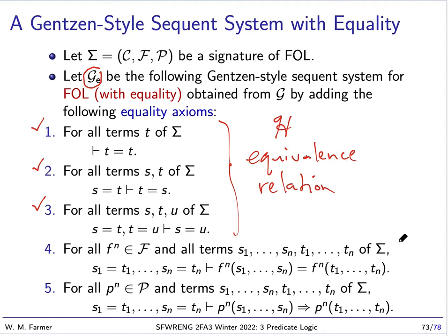And then these last two are for a congruence. Now if we have a congruence, that means we can substitute equals for equals. And so these two axioms are very similar to the ones we had for script H.